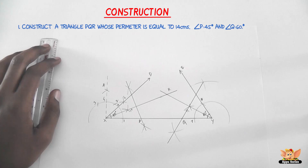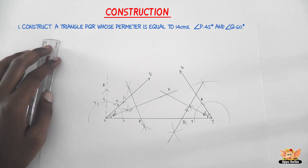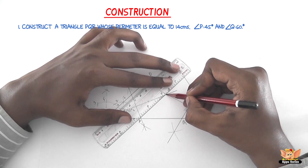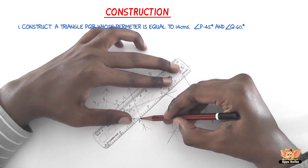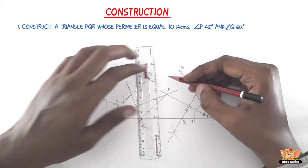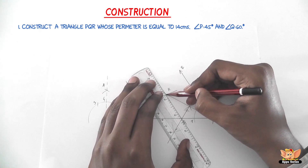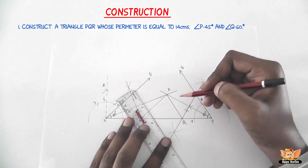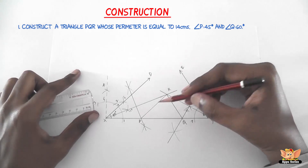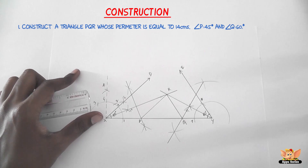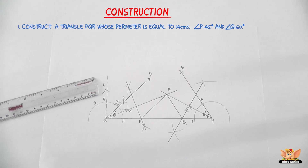The final step is to join PR and QR to obtain the required triangle PQR. Join PR and QR — and here we go, we have obtained triangle PQR.